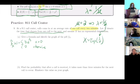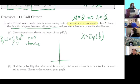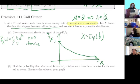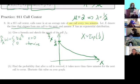Let me sketch a graph. The function starts at one-half at x = 0 — that's not critically important — but what is important is that as x goes to infinity, the function decays to zero.